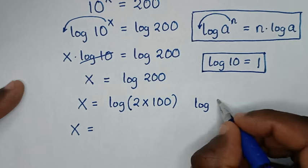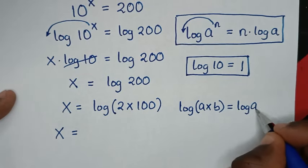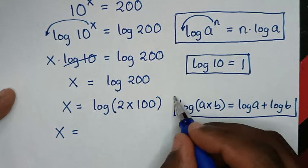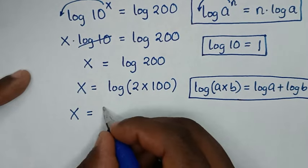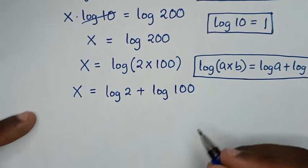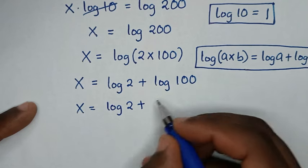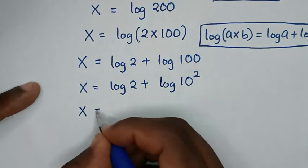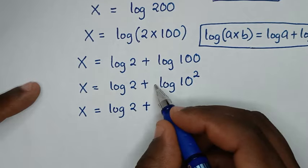Using the log product rule — log of a times b equals log of a plus log of b — this becomes x is equal to log of 2 plus log of 100, which is the same as log of 2 plus log of 10 squared.